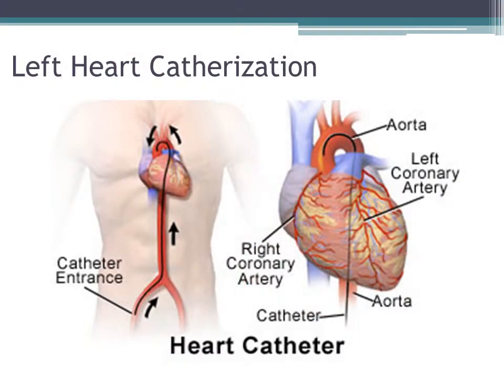Depending on your age and risk factors, a left heart catheterization may be necessary. A left heart catheterization is performed by a cardiologist in the catheterization lab. In this study, a catheter is placed in an artery in your leg and advanced into the small vessels that come out of your aorta and supply blood to your heart. Occasionally, interventions may be necessary to open vessels up and provide adequate blood flow to your heart so that you will tolerate a lung transplant.